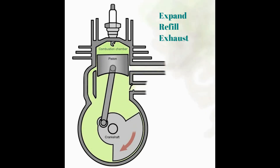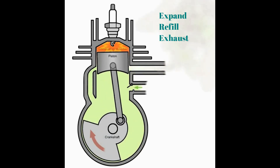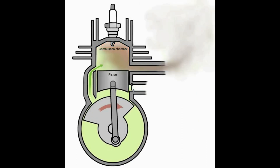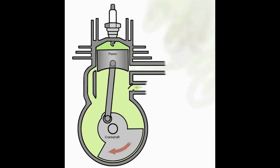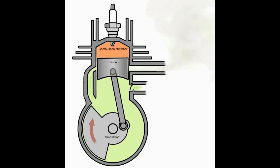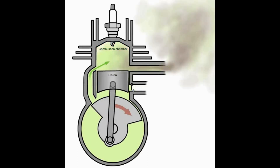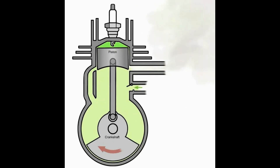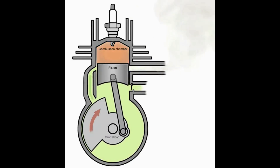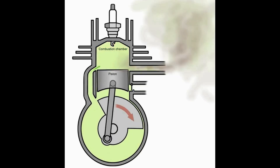On the second stroke we have expand, refill and exhaust. When combustion is created, the hot air expands and presses the piston downward from TDC to BDC, reducing the volume of the crankcase. While the piston moves downward, the air-fuel mixture refills the combustion chamber and forces the fumes out of the combustion chamber through the exhaust.